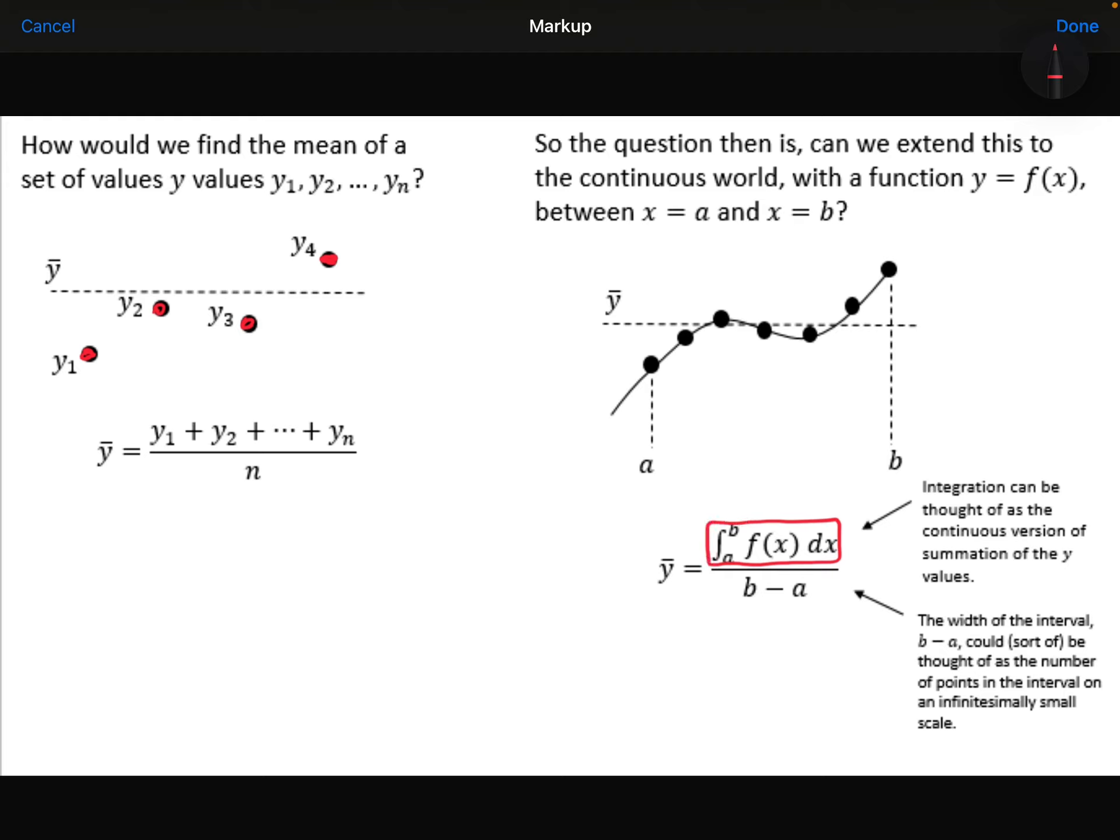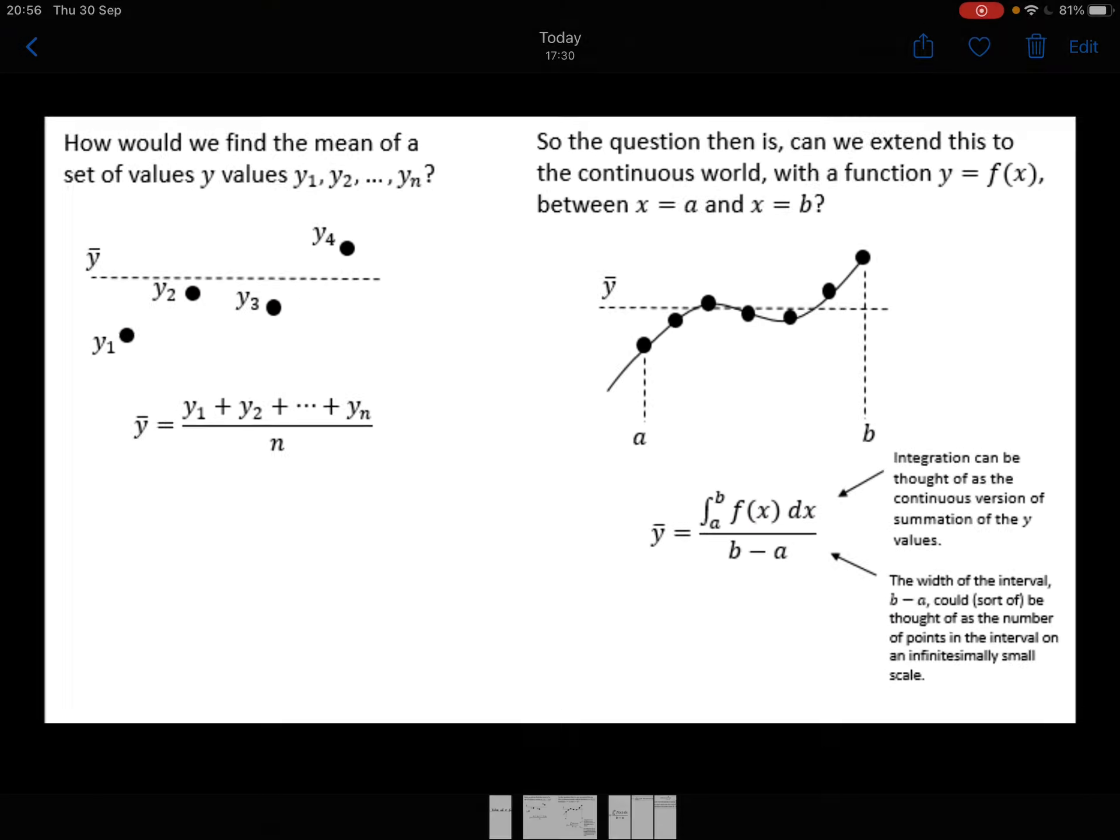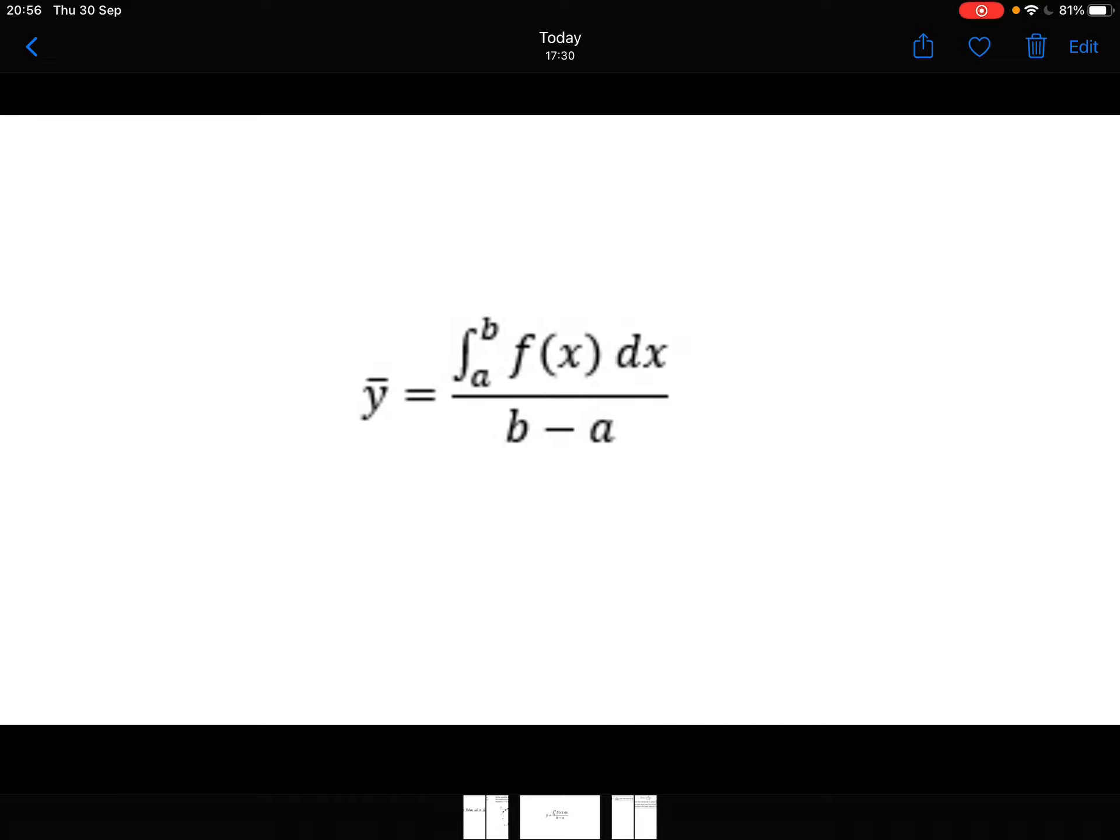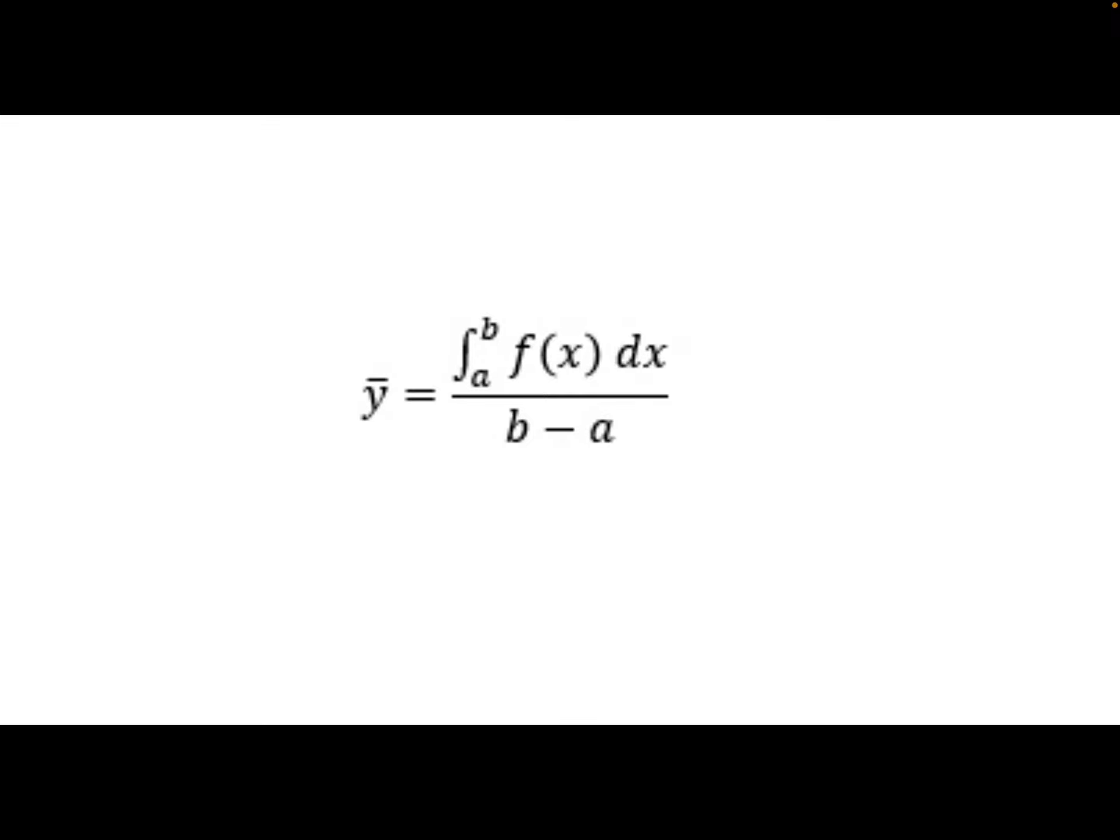That's the same as the sum. And in terms of dividing by the size of that interval, well, it's just the width of the interval, b minus a. So we have this formula that allows us to work out the mean of a function over an interval.